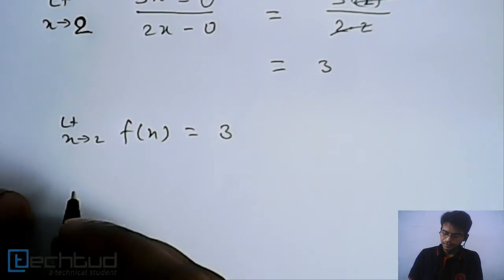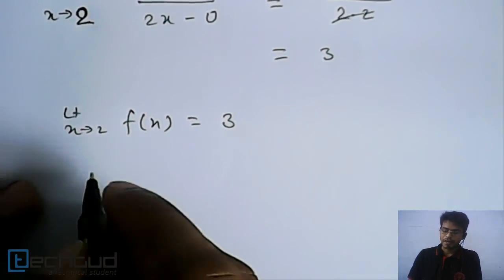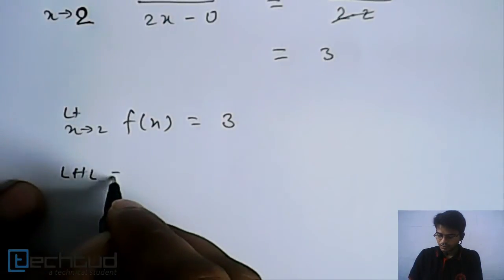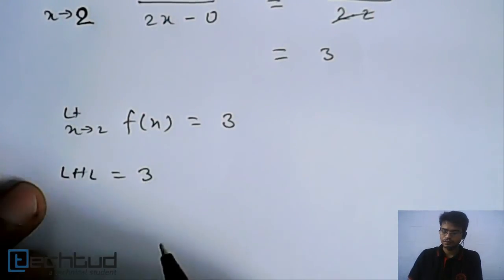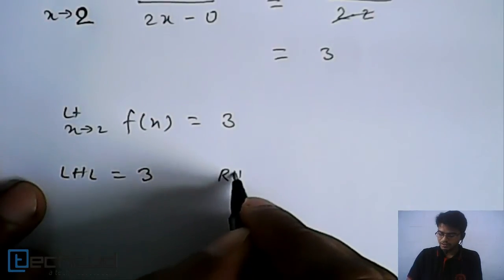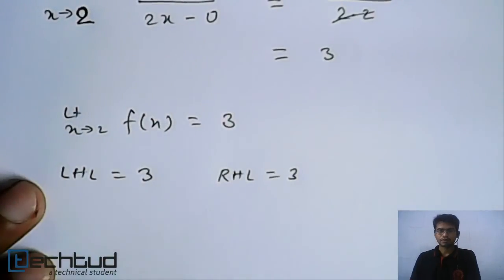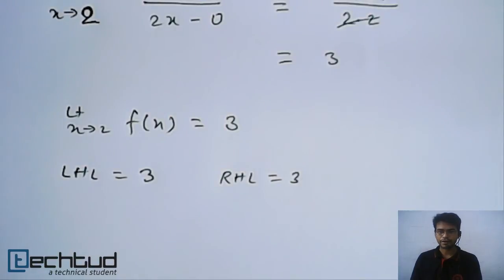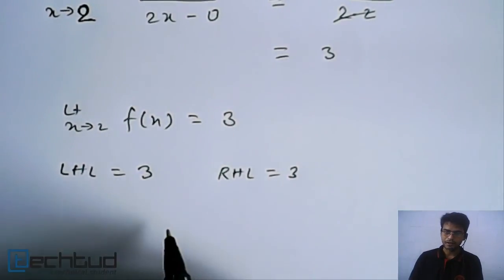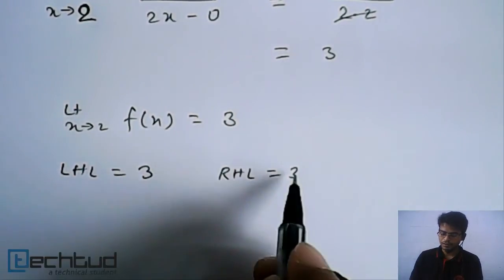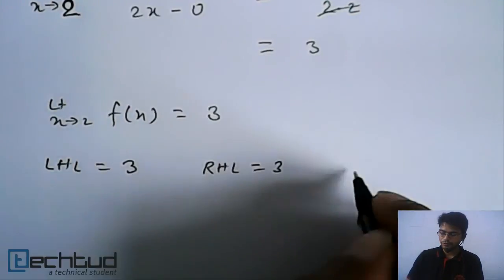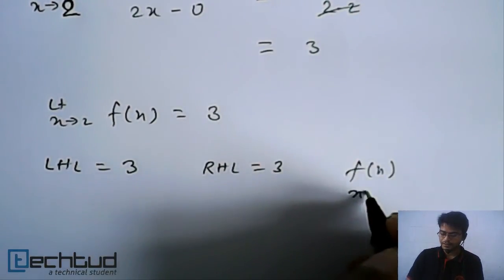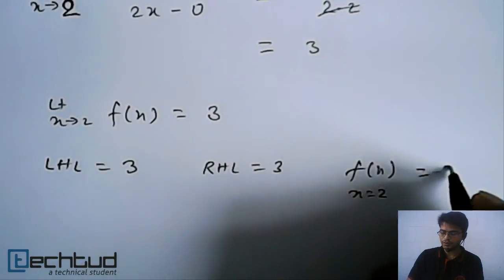This means the left-hand limit (LHL) equals 3 and the right-hand limit (RHL) equals 3. However, at this point, the function is not defined. So we have to define the value of f(x) at x = 2 to be equal to 3.